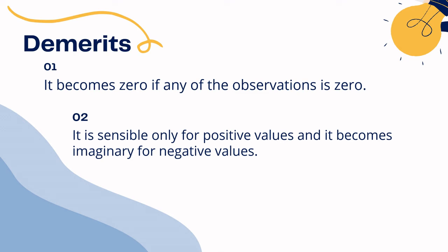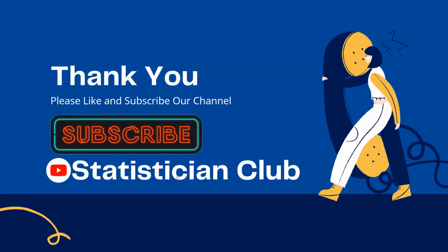Number two: it is sensible only for positive values. It becomes imaginary for negative values, because for negative values the logarithm is not defined. So geometric mean is valid only for positive values and becomes imaginary when any of the values are negative.